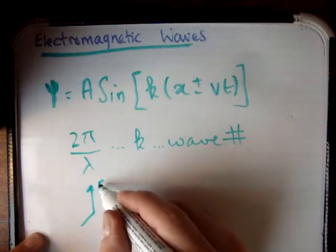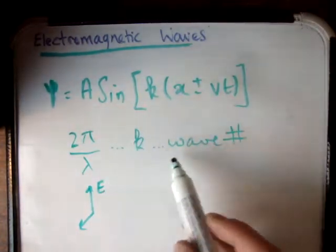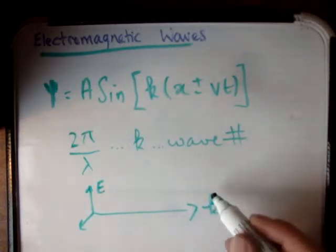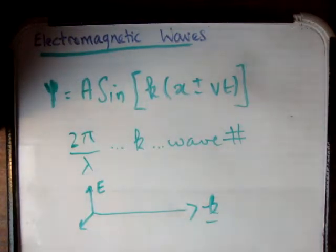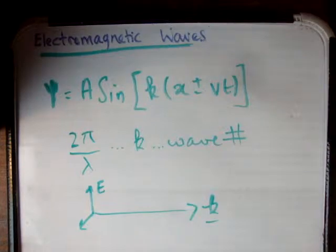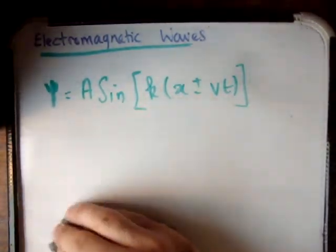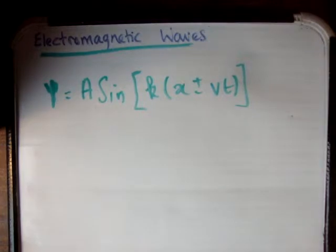We know that electric and magnetic waves are perpendicular to each other, and the wave number k is perpendicular to both of those, giving you the direction of propagation. k is a vector, but in one dimension we just call it 2π over lambda — a single number. So the wave number is there, and it actually has a physical meaning because it gives the direction of movement.